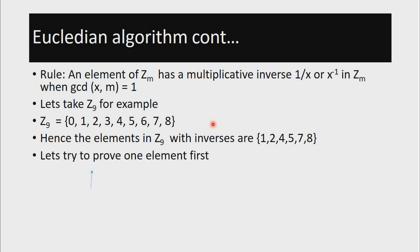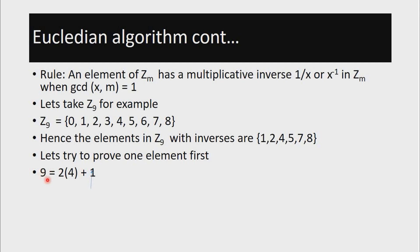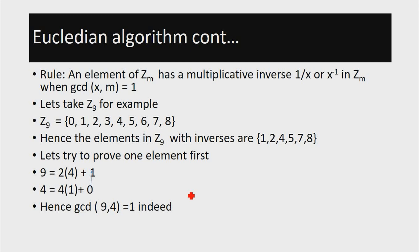Let us prove the GCD of one element in this set just to confirm. Using the method described before, let us find the GCD of 9 and 4. First, we express 9 in terms of 4. The biggest integer we can multiply to 4 is 2, so 9 is equal to 2 times 4 plus 1. The next step is to express 4 in terms of 1, so 4 is equal to 4 times 1 plus 0. Since the element above the 0 is 1, this proves that the GCD of 9 and 4 is equal to 1.